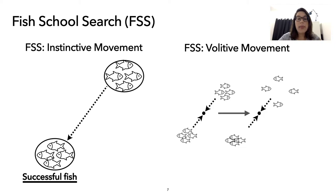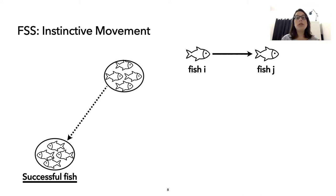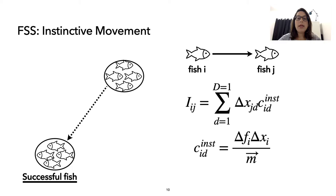So this is FSS, and now we can build a network based on each collective movement. So the influence of a fish I to fish J is equal to how much the fish I contributed to the displacement of fish J. So how much they are attracting each other.